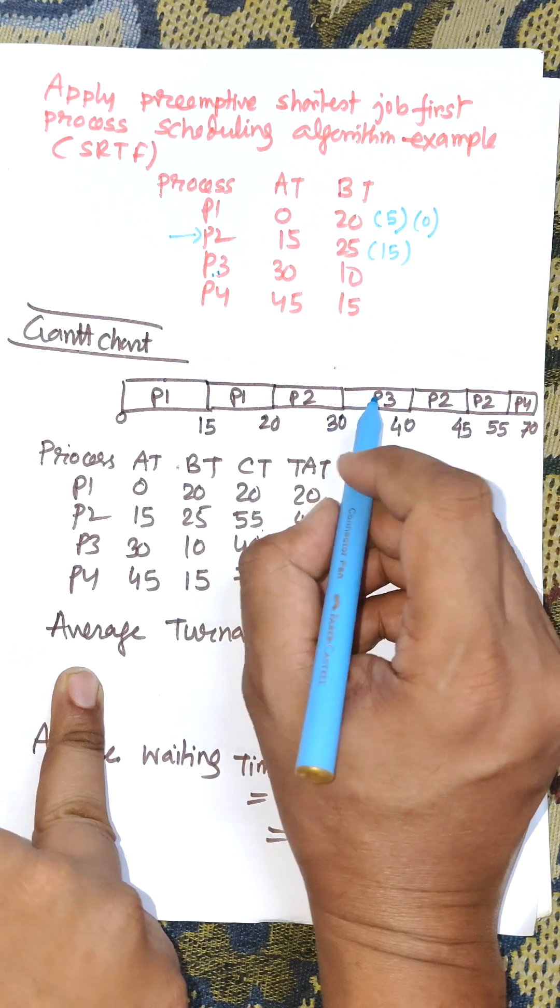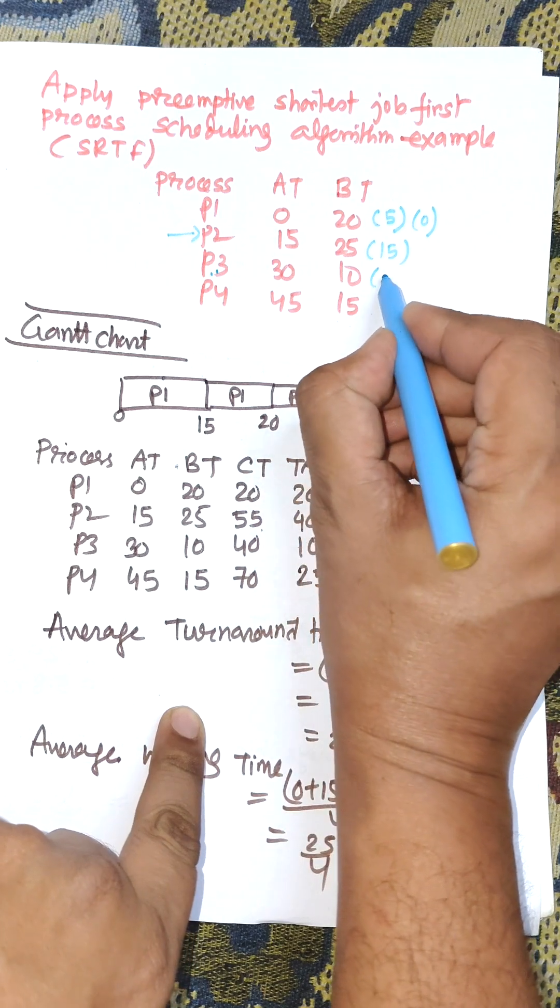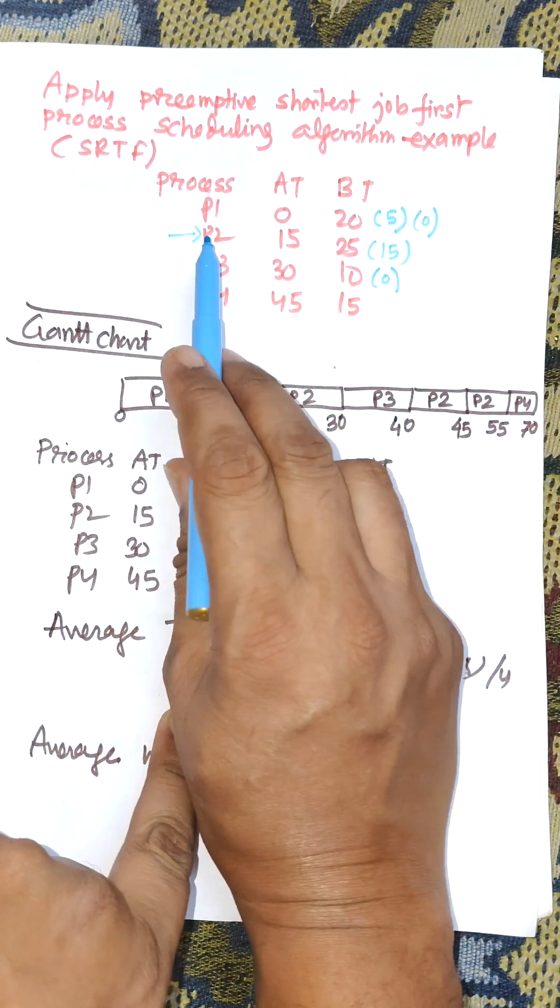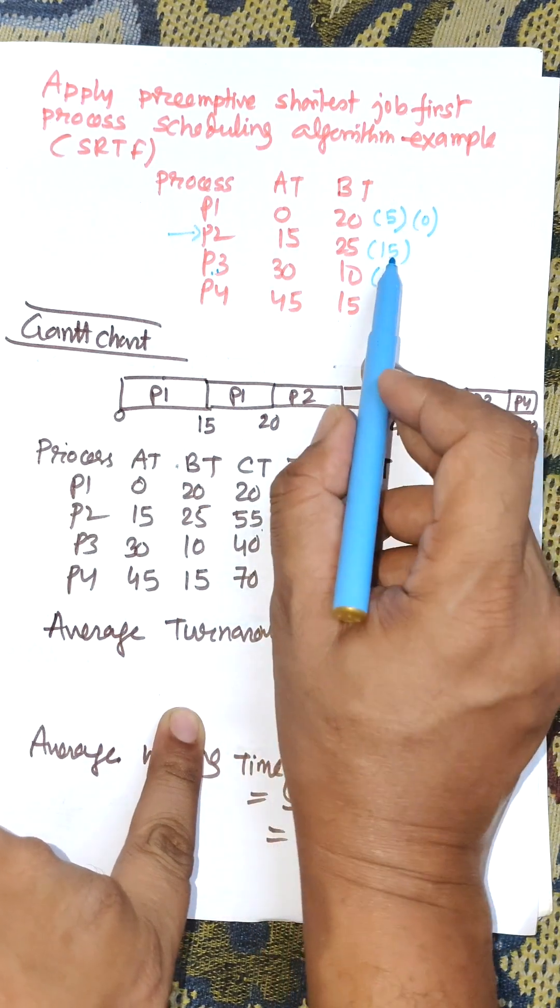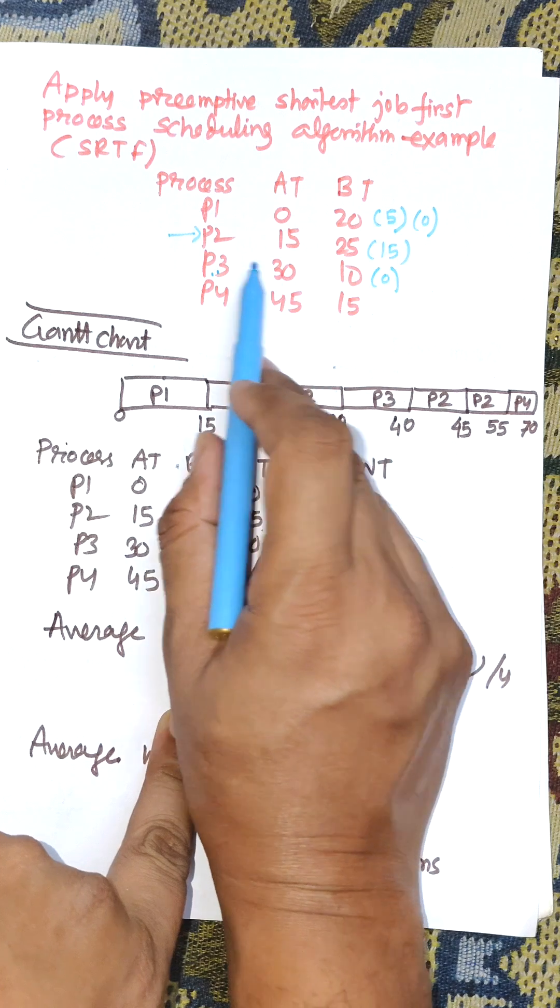P3 will continue execution and finishes. Now P2 is there, so P2 will start its execution because the arrival time of P4 is 45.